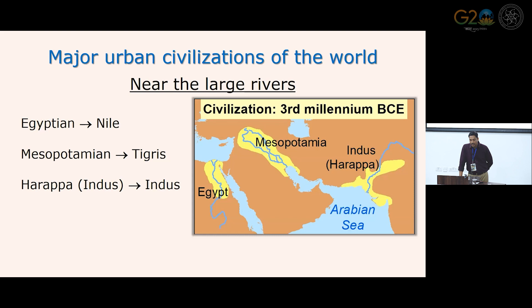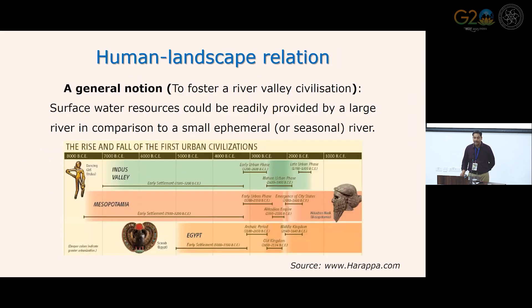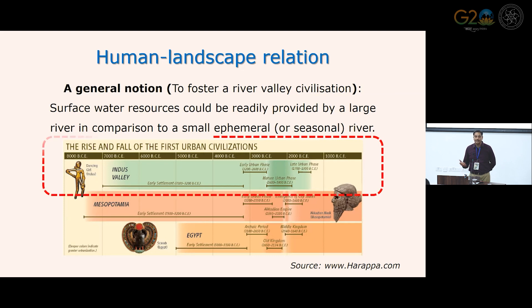Since our focus is the Indus civilization, this slide shows major urban civilizations of the world near large rivers: Egyptian near the Nile, Mesopotamia near the Tigris, and Harappan or Indus civilization near the Indus River. These are all major urban civilizations of the third millennium BC. With this notion that major civilizations arose near large rivers, surface water resources could be readily provided by large rivers compared to small ephemeral or seasonal rivers. These major civilizations declined around the second millennium BC, related to drying of these large rivers.